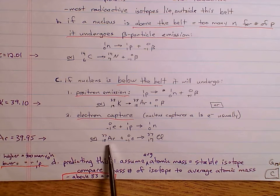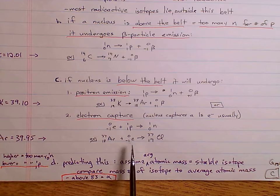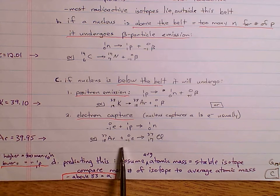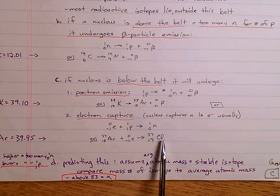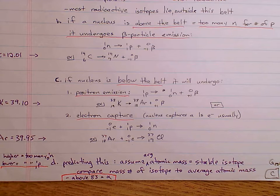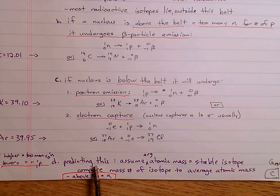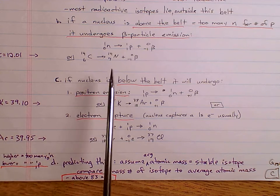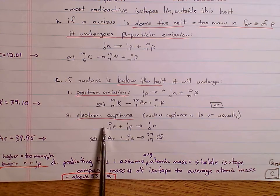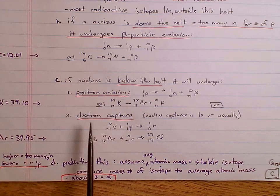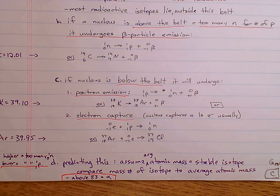For example, argon-37, which is below the belt of stability, undergoes electron capture to produce chlorine-37.